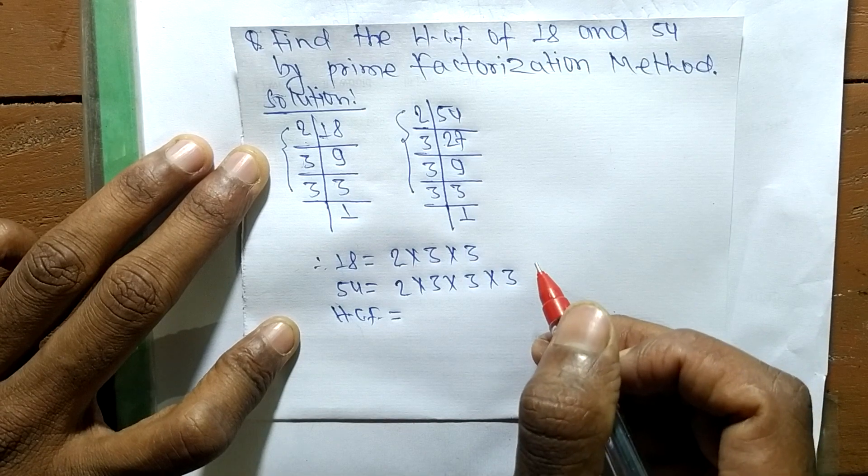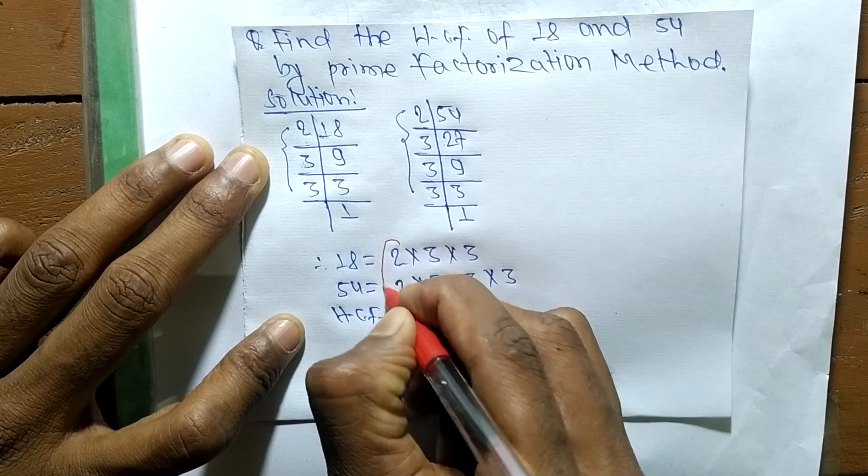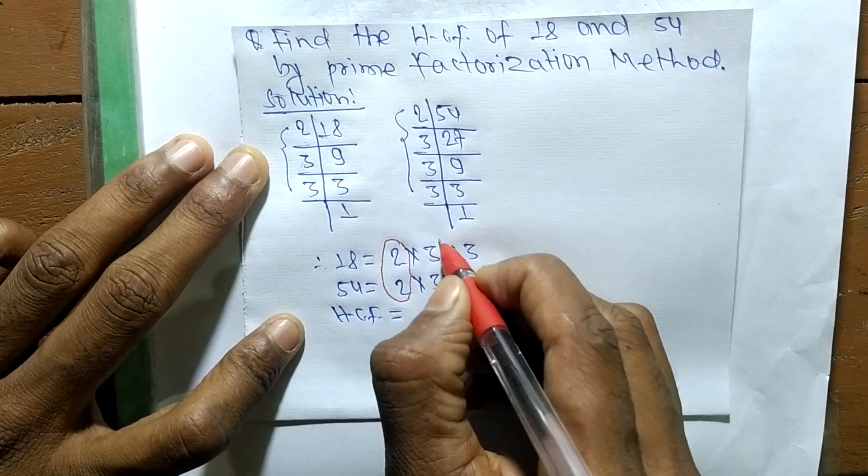the common factors in the prime factors of 18 and 54. So the first common factor here is 2, second